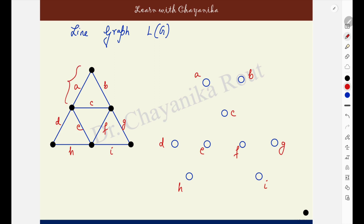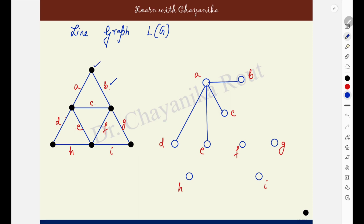Edge A — it is sharing its end points. This is one end point of A and this is the other. This end point is being shared with only B, whereas this end point is shared with C, D and E. So edge A as a whole is sharing its end points with edges B, C, D and E. The vertex A in the line graph has to be made adjacent to B, C, D and E. Next, come to edge B. Edge B is sharing one end point with A and the other end point with C, F and G. So B will be made adjacent to A — already done — and also to C, F and G.